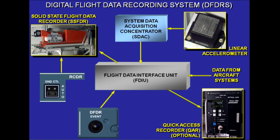The linear accelerometer measures the acceleration of the aircraft in all three axes. The SDAC digitalizes the analog signal of the linear accelerometer and sends it to the FDIU. For maintenance and performance purposes, the optional quick access recorder, QAR, records the same parameters as the SSFDR.